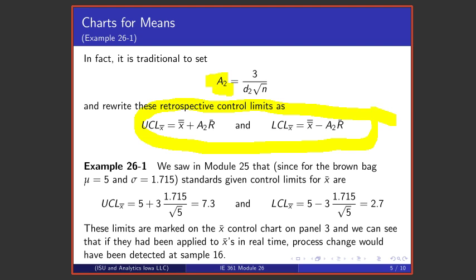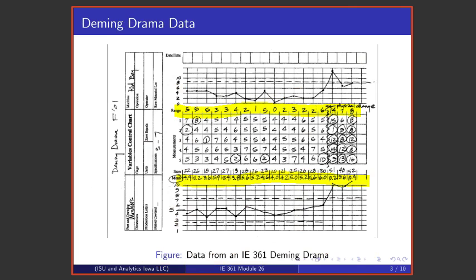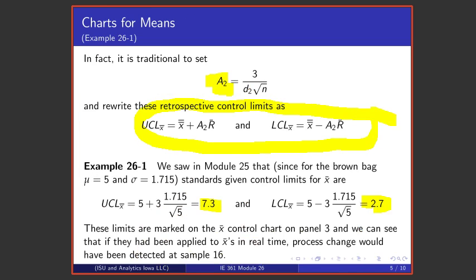We saw in Module 25 that if one makes standards given control limits for X-bar, the upper control limit is 7.3, the lower control limit is 2.7. Looking back on the control chart on this panel with X-bars plotted, there's 2.7, there's 7.3, and these last three X-bars plot above control limits while the other X-bars are well within control limits. There is evidence at samples 16, 17, and 18 that indeed the data are not being drawn from the brown bag or the red bag, but from a different process.